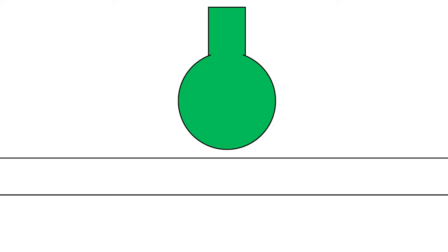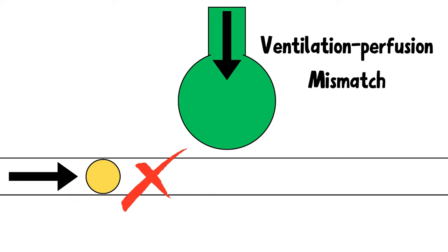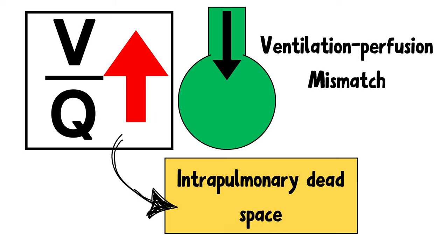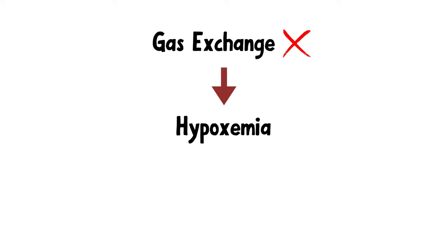If this is your alveolus and this is your artery, your breathing is fine so your lung is getting ventilated. But since there's no blood flow — aka perfusion — there's going to be a ventilation-perfusion mismatch. The ventilation is high but the Q, or perfusion, is low, leading to a high VQ ratio, which can easily be spotted in a VQ scan. This VQ mismatch creates an intrapulmonary dead space, which refers to an area where air is present but does not participate in gas exchange.